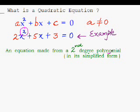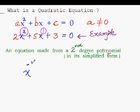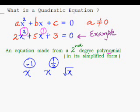The second condition is that it must be a polynomial. A polynomial is any algebraic expression where the power of the variable x is a non-negative integer — like 2 or 1. But if any variable in the expression has a negative power, like x raised to the power minus 1, or a fractional power like x raised to the power 1/2 (which is another way of writing root x), then it will not be a polynomial and, as a result, will not be a quadratic equation.